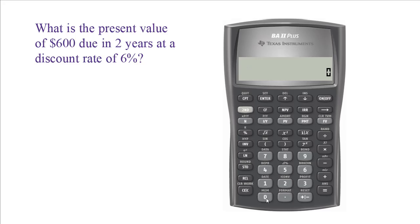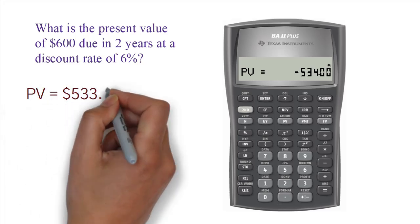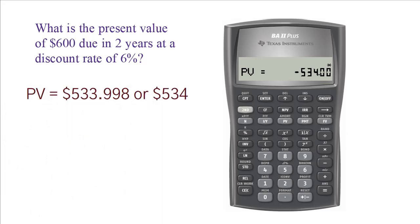This is good practice. If you do not do it, you might mistakenly carry forward a previously entered value to this problem. Once you are done entering all the values except PV, press CPT and then press PV. You get PV equals 533.998, or 534.